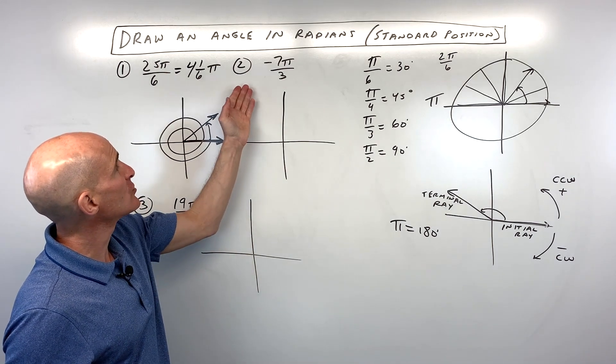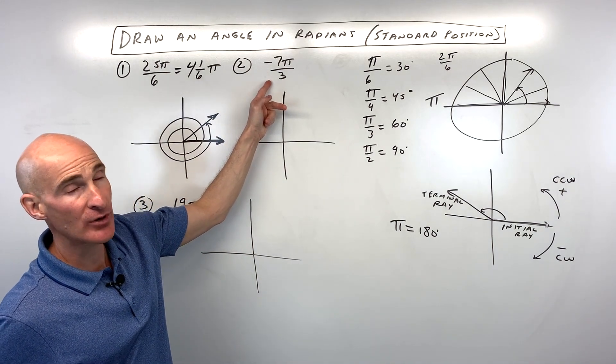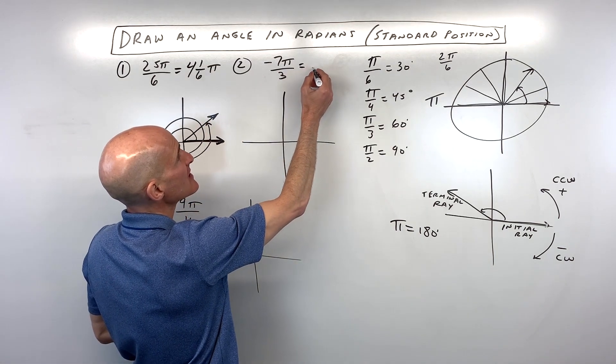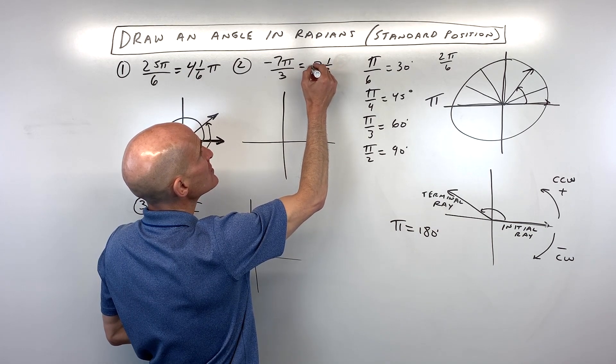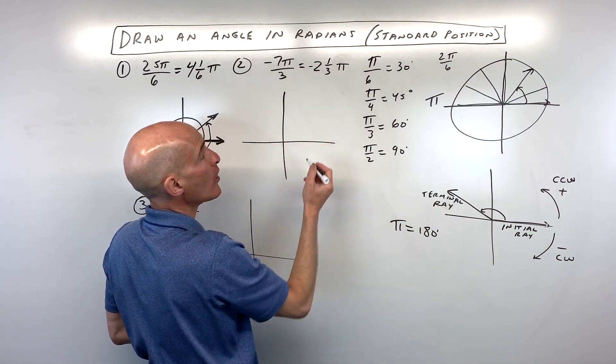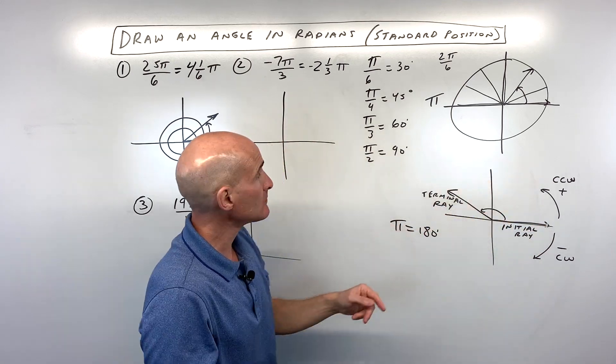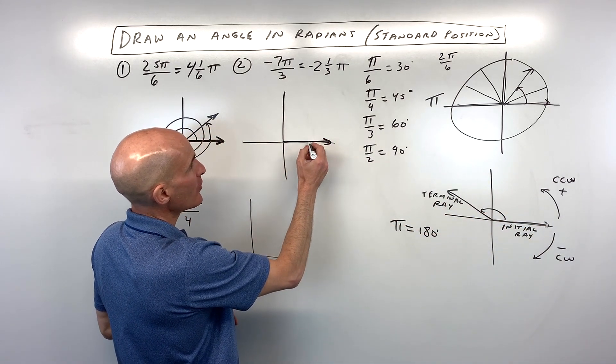I'll look at number 2 now. So number 2, we have negative 7 pi over 3. So the first thing I would do is convert this into a mixed number. 3 goes into 7 twice with 1 left over. So this is really like negative 2 and 1 3rd pi. Negative means we're going clockwise, right?